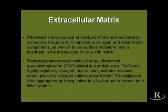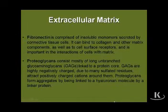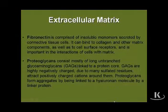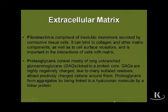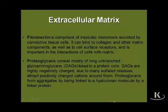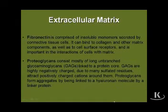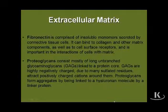In addition to fibrillar proteins, the extracellular matrix also consists of fibronectin, proteoglycans, and glycosaminoglycans. Fibronectin is comprised of insoluble monomers secreted by connective tissue cells. Fibronectin binds to collagen and other matrix components, as well as to cell surface receptors, and is important in the interaction of cells with the matrix.